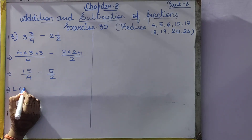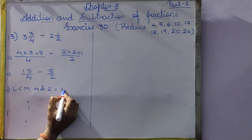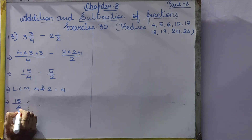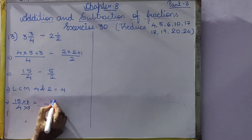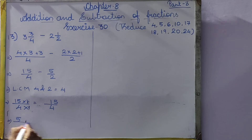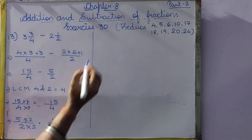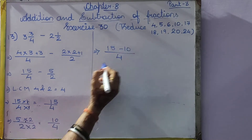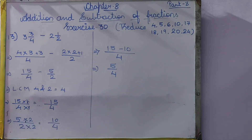Both the denominators are different. We will take out the LCM of 4 and 2, which will be 4. Now 15 by 4: in the table of 4, how many times does 4 come? 4 1's are 4, so 15 1's are 15. Here 5 by 2: in the table of 2, how many times does 4 come? 2 2's are 4, and 5 2's are 10. So the same denominator is 4. 15 minus 10 will be 5 divided by 4. Our answer is 5 by 4.